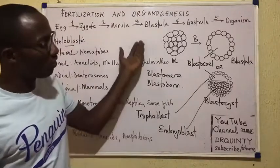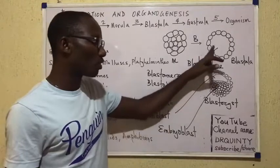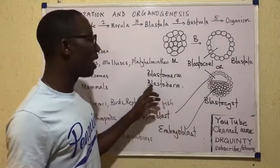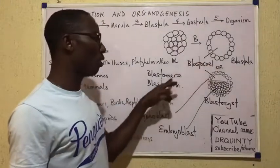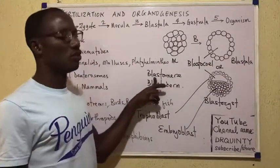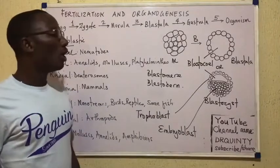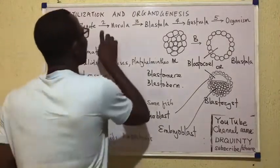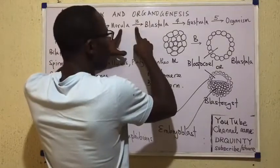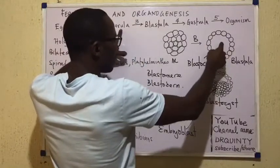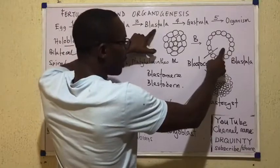Whereas in the general blastula, the two parts are the blastocoele — the cavity — and the blastoderm — the cell mass — which is made up of individual cells called blastomeres. So blastulation simply involves the morula acquiring a cavity. Once the cavity comes, we say blastulation is complete.